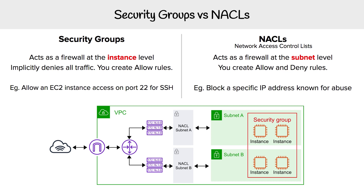Security groups implicitly deny all traffic, so you have to create allow rules to get access to things. That's both for inbound and outbound. So if you wanted to open up port 22 so you could SSH into an instance, that's an allow rule you would create on that security group.